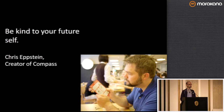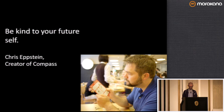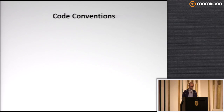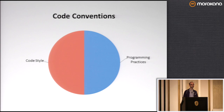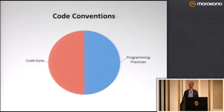Chris Epstein, who created Compass, said in a talk: 'Be kind to your future self.' Because the person that may be maintaining your crappy code could be you. If you're writing code and you think, 'In another month I'm going to have no idea what I'm doing here,' that probably means you should stop and think more carefully about how you're writing your code. So let's talk a little bit about code conventions.